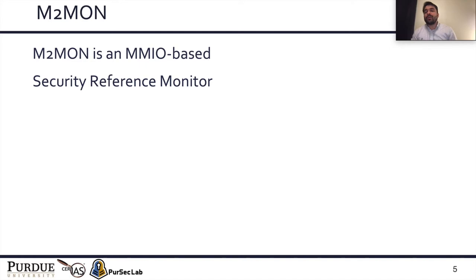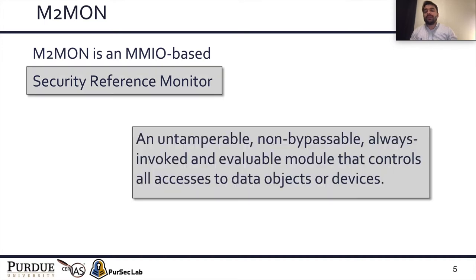M2Mon is an MMIO-based security reference monitor. To explain what M2Mon really is, I have to explain what a security reference monitor is. A security reference monitor is an untamperable, non-bypassable, always-invoked, and available module that controls all accesses to data objects or devices. Informally, you can think of it as a gatekeeper to a particular object or device. For M2Mon, that particular object is MMIO.